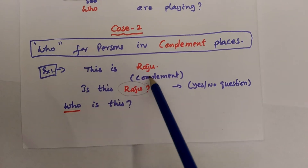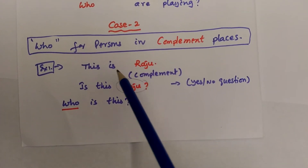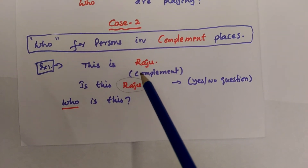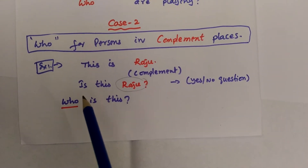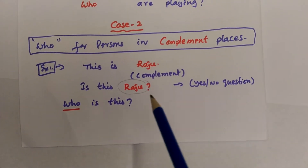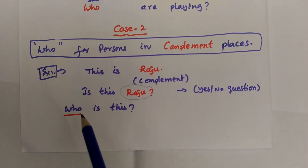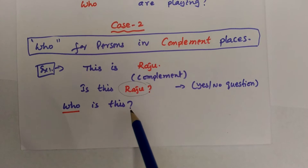Example number one: 'This is Raju.' Here, Raju is in the complement place. We cannot directly make use of 'who'. First, we have to convert this sentence into a yes/no question — this is the first step. So 'This is Raju' becomes 'Is this Raju?' Then, by removing the person in the complement, we write 'who' at the beginning of the sentence. The answer is: 'Who is this?' In the second case, if a person is found in the complement place, change the sentence to a yes/no question, remove that person, and write 'who' at the beginning.